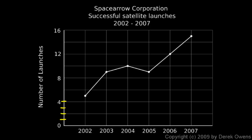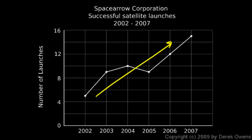We have one, two, three, four — even though every number isn't marked, we can still read them off the graph. One of the things we see here is that as time goes on, the number of launches trends upward. Even though they dipped back down a little from 2004 to 2005, in general the trend is upward, so Space Arrow Corporation is growing and getting more successful with satellite launches as time goes on.